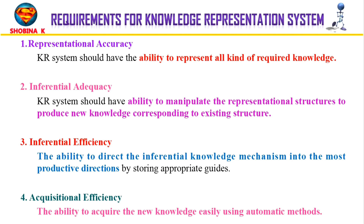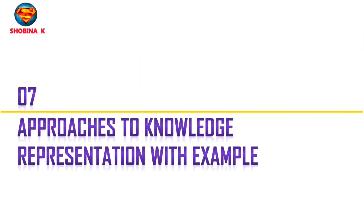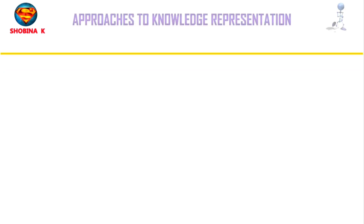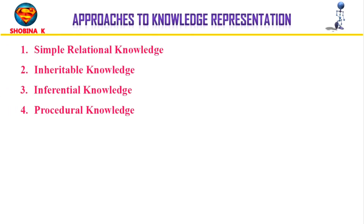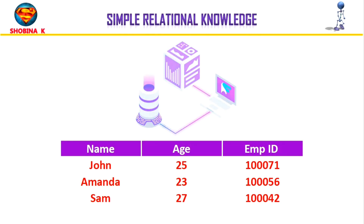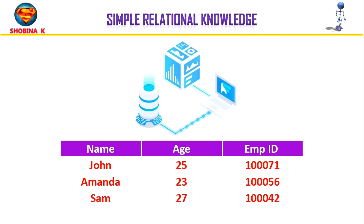Now let's understand some of the approaches to knowledge representation with examples. There are different approaches: simple relational knowledge, inheritable knowledge, inferential knowledge, and procedural knowledge. Simple relational knowledge is the simplest way of storing facts using the relational method, where all facts about a set of objects are set out systematically in columns. This approach is famous in database systems where the relationship between different entities is represented.